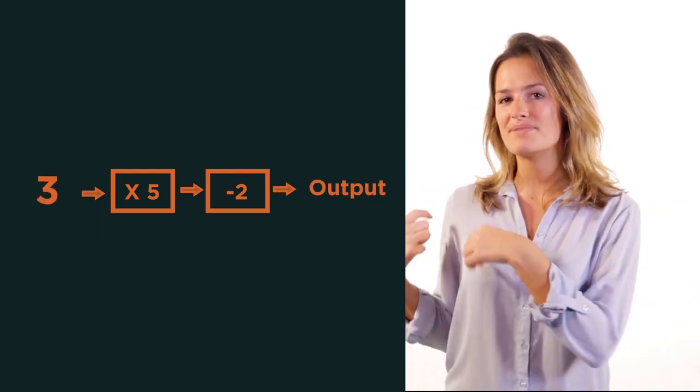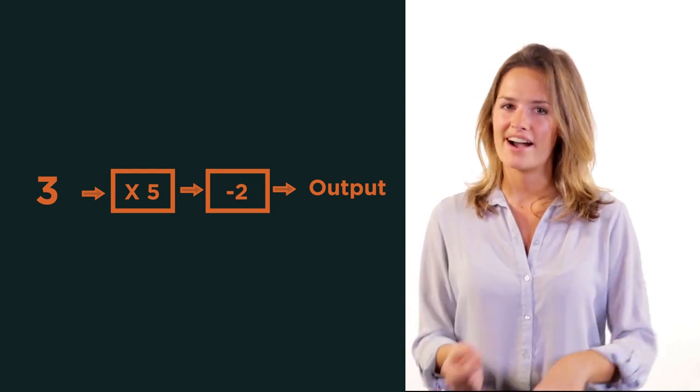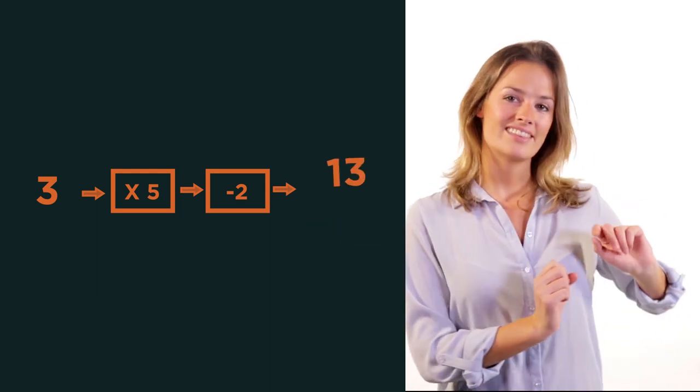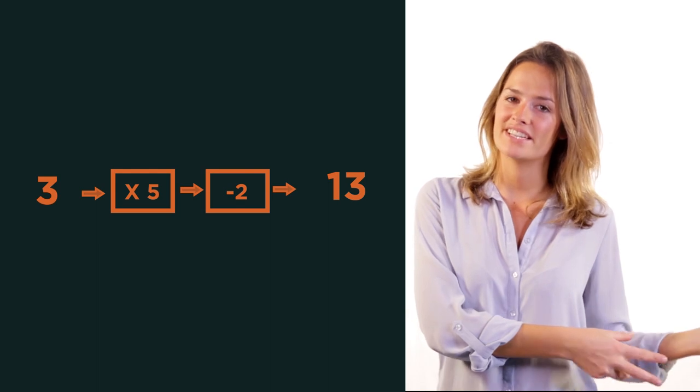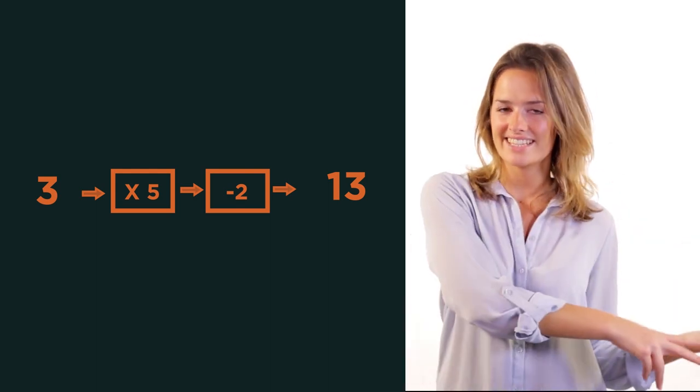So if we input 3 into a function, multiply by 5, subtract 2, then 13 is outputted. 3 has transformed into 13.